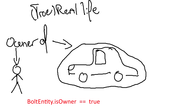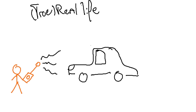Being an owner is not a changeable property. It's assigned to a peer with the BoltNetwork.Instantiate call, and this peer is the only one where entity.isOwner is equal to true. Ownership of an entity cannot be transferred to anyone else. The owner of an entity has absolute control over everything like state, transform, etc. Let's mark that orange color equals owner, and give them a remote because they can change everything on this car.